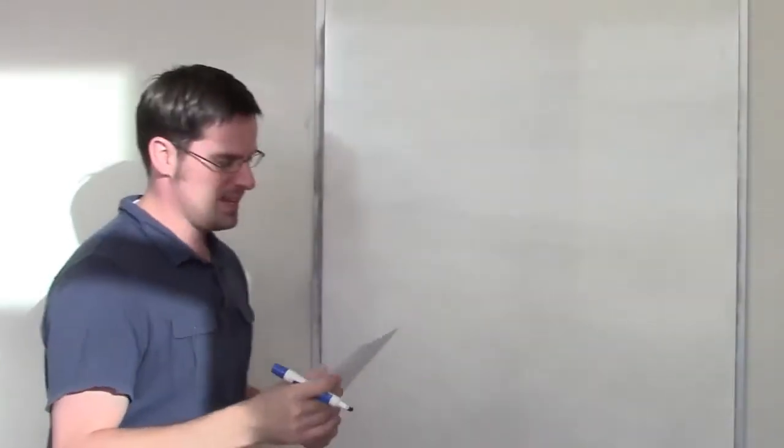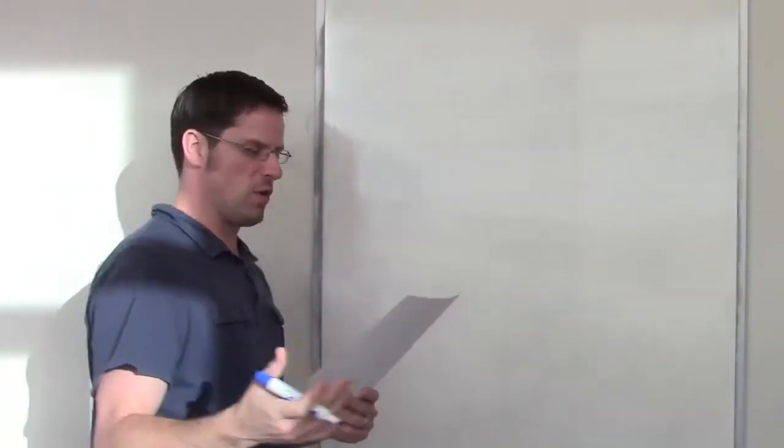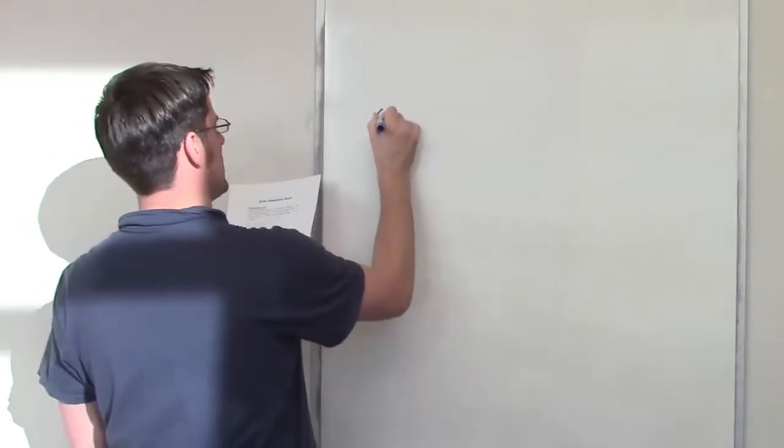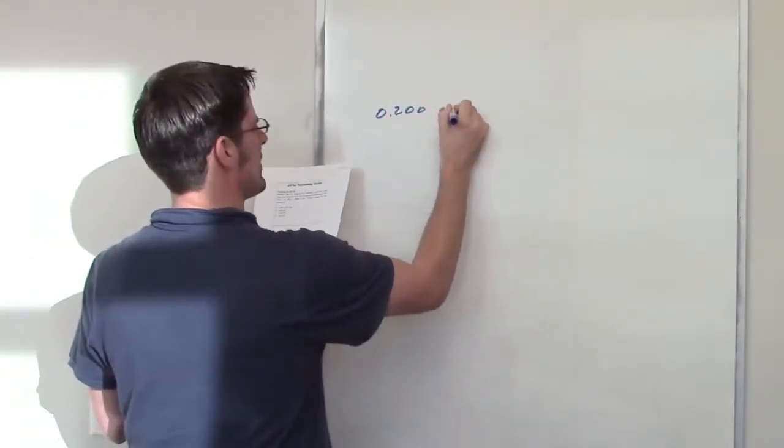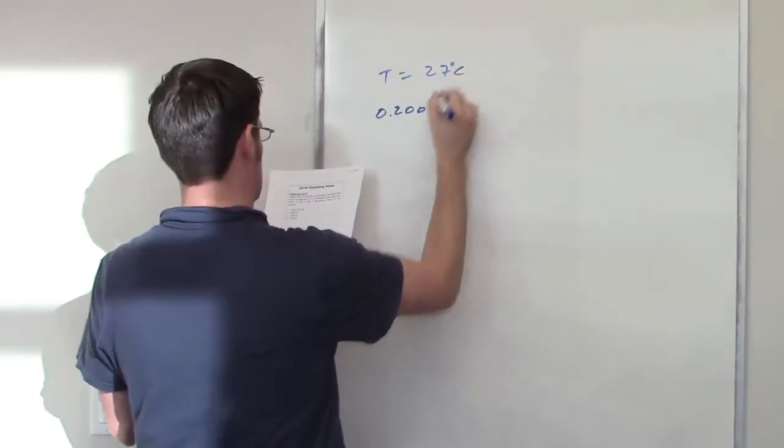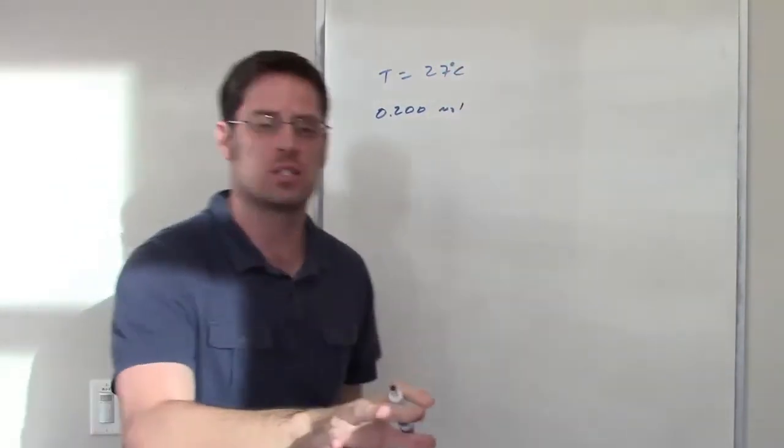Okay, this is a fun problem. It asks us to imagine we've got a volume of a chamber that contains 0.200 moles of an ideal gas at temperatures at 27 degrees Celsius and we increase it isothermally.